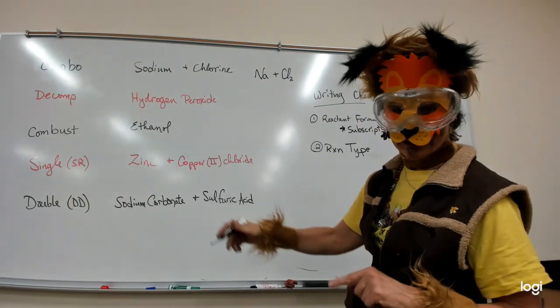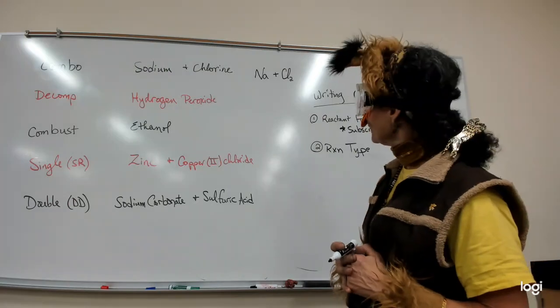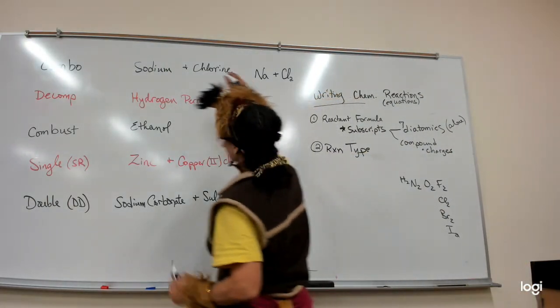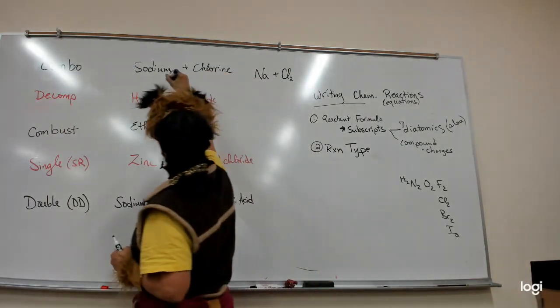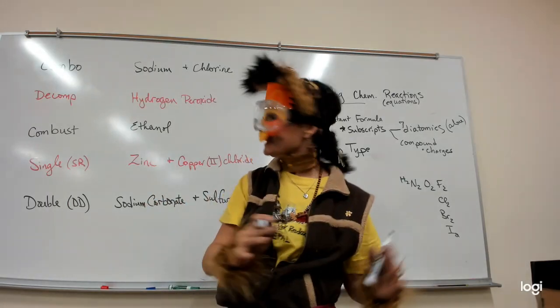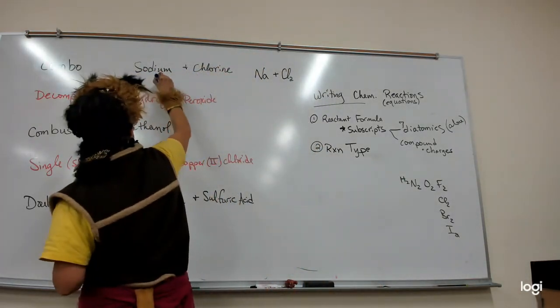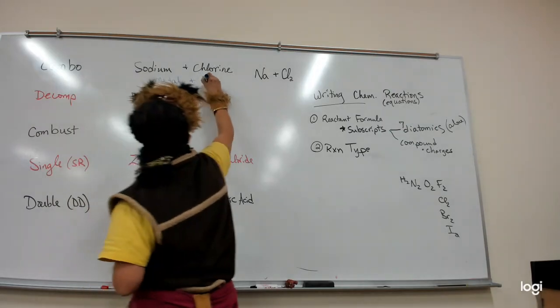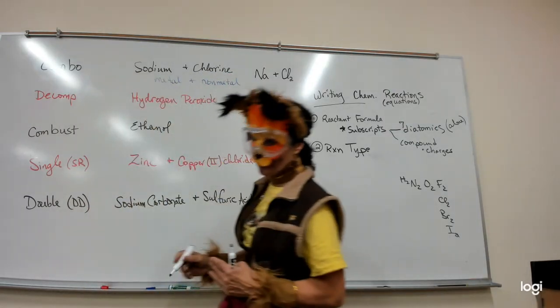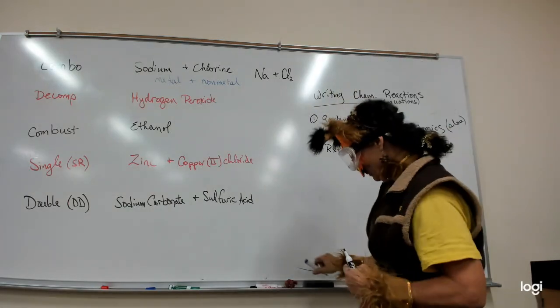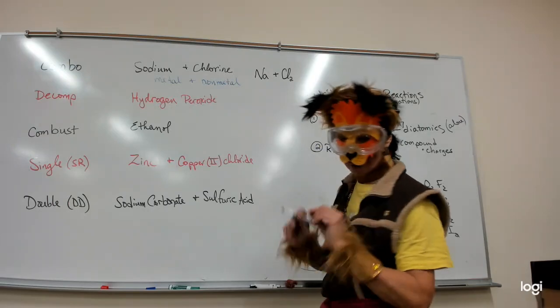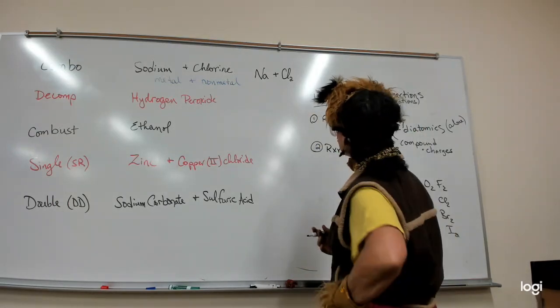As I go through each of them, I'll talk about how you know. For example, our very first one here is that typically you're going to have an element plus an element. So one thing plus another thing. Typically, it's going to be a metal plus a nonmetal, but we could see nonmetal plus nonmetal. But it's an element plus an element.